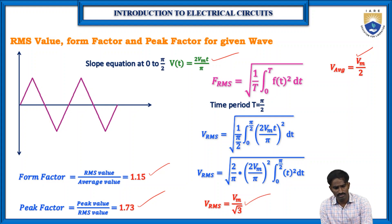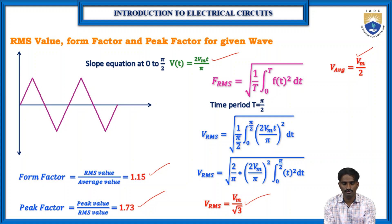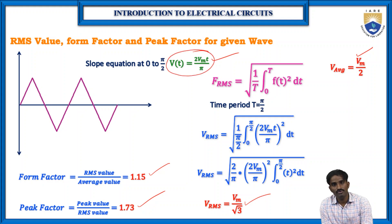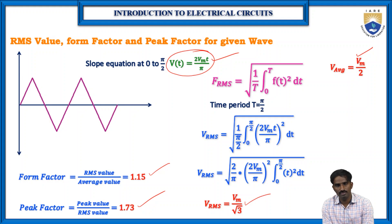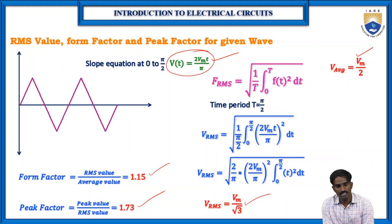In this way, we can find the average, RMS, form factor, and peak factor for any waveform — whether sawtooth or any other periodic waveform — using the same approach. The key steps are: first identify the time period of the waveform, then derive the equation f(t) for that waveform. For sine waves we use Vm·sin(ωt), for square waves it is Vm (constant), and for triangular waves we derive it using the slope equation. Then substitute into the standard formulas.